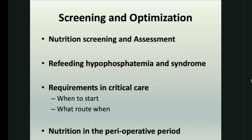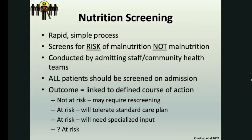In terms of what we will be covering today: we'll look at nutrition screening and assessment and the difference between the two. Then we'll look at refeeding, hyperphosphatemia, and refeeding syndrome. Then we'll touch on the requirements in ICU, especially with regards to when to start and what route we use. Then we'll look at nutrition in the perioperative period, specifically in relation to what the ESPEN surgical guidelines tell us to do. Nutrition screening is a rapid and simple process — it screens for the risk of malnutrition, not malnutrition itself. It's conducted by any staff member of the multidisciplinary team. Ideally, all patients should be screened on admission to a healthcare facility, which is not really happening in our setting, but that is the ideal.